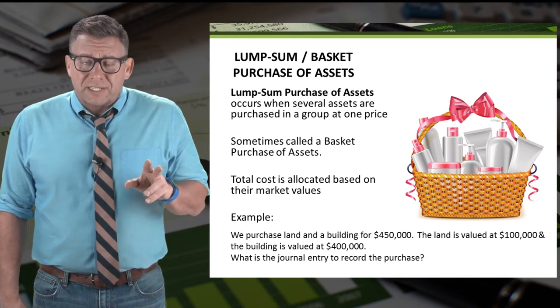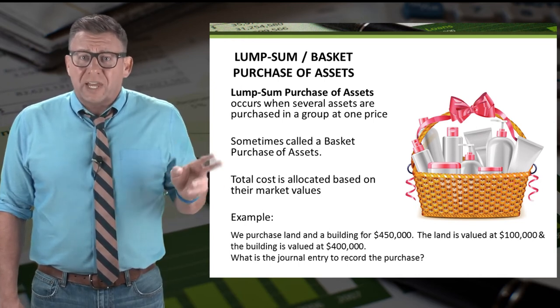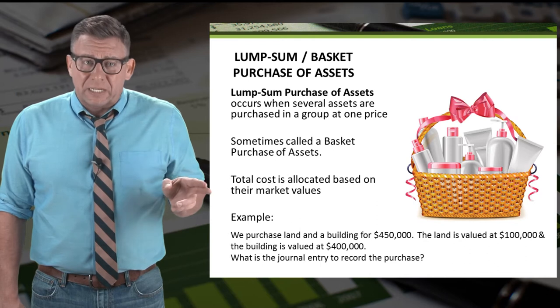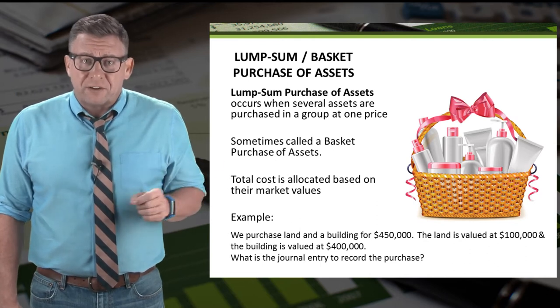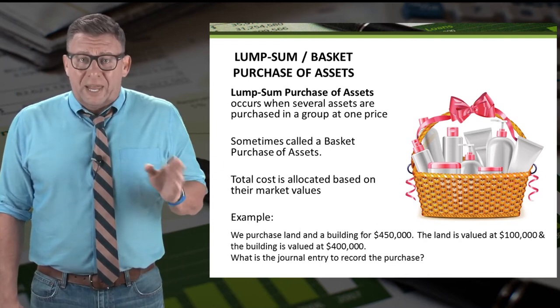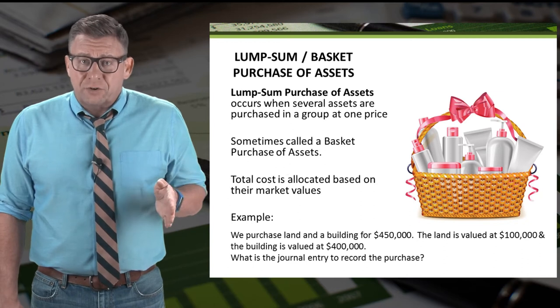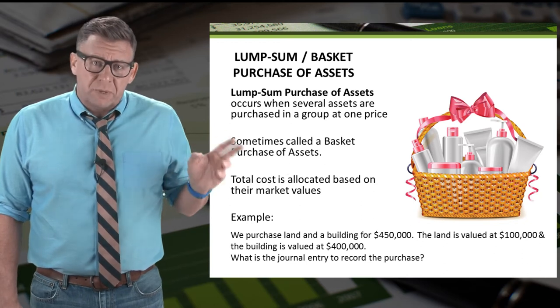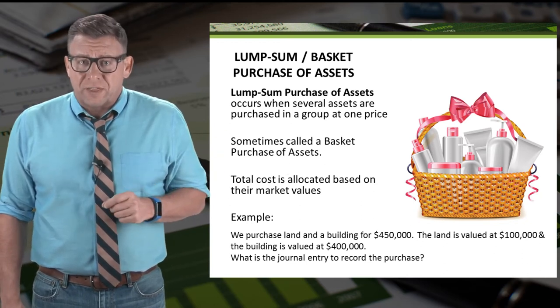Let's look at an example. We purchase land and a building for $450,000. Land is valued at $100,000 and building is valued at $400,000.